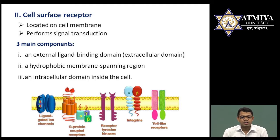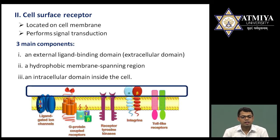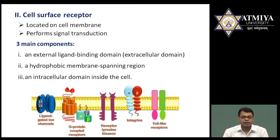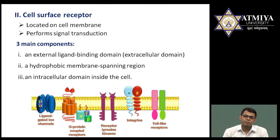Cell surface receptors are present on the cell membrane and respond to hydrophilic molecules. They perform signal transduction via certain conformational changes and activate secondary messengers. There are three main components of the cell surface receptor. The first is the external ligand-binding domain, known as the extracellular domain, which is located outside the cell.